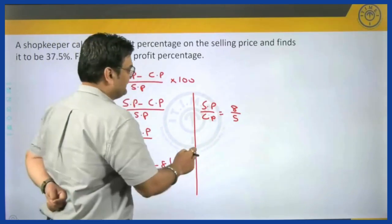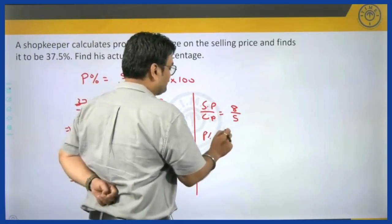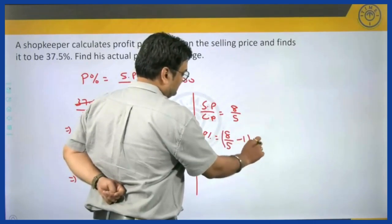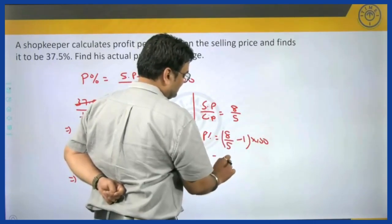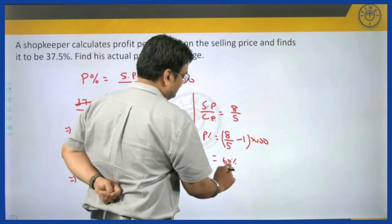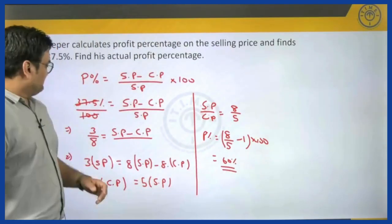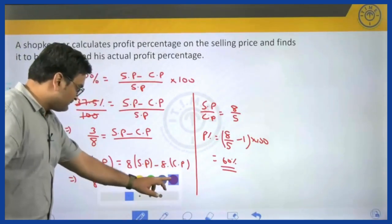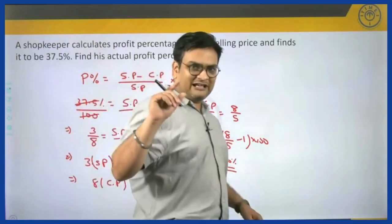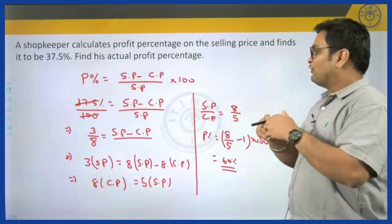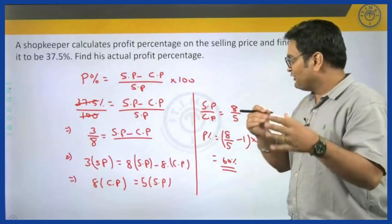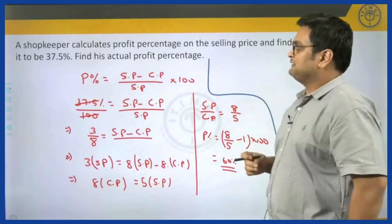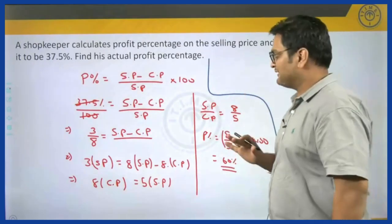Once you get the ratio SP/CP as 8 by 5, we can calculate the actual profit percentage as selling price by cost price minus 1 into 100. Solving this gives the answer as 60 percent. But this is a very lengthy approach to getting the answer. We could get to the same answer using almost negligible steps — 1 or 2 steps maximum.